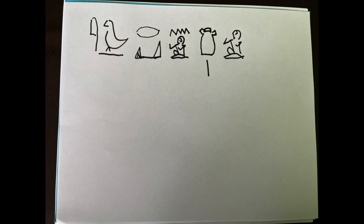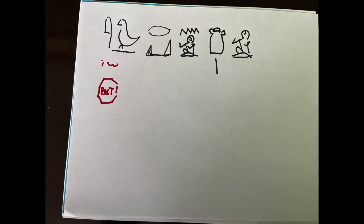All right, let's take a quick look at an ideogram in a sentence. So here we have a sentence structure using the ideogram heart, ib, that is the second to last glyph there.